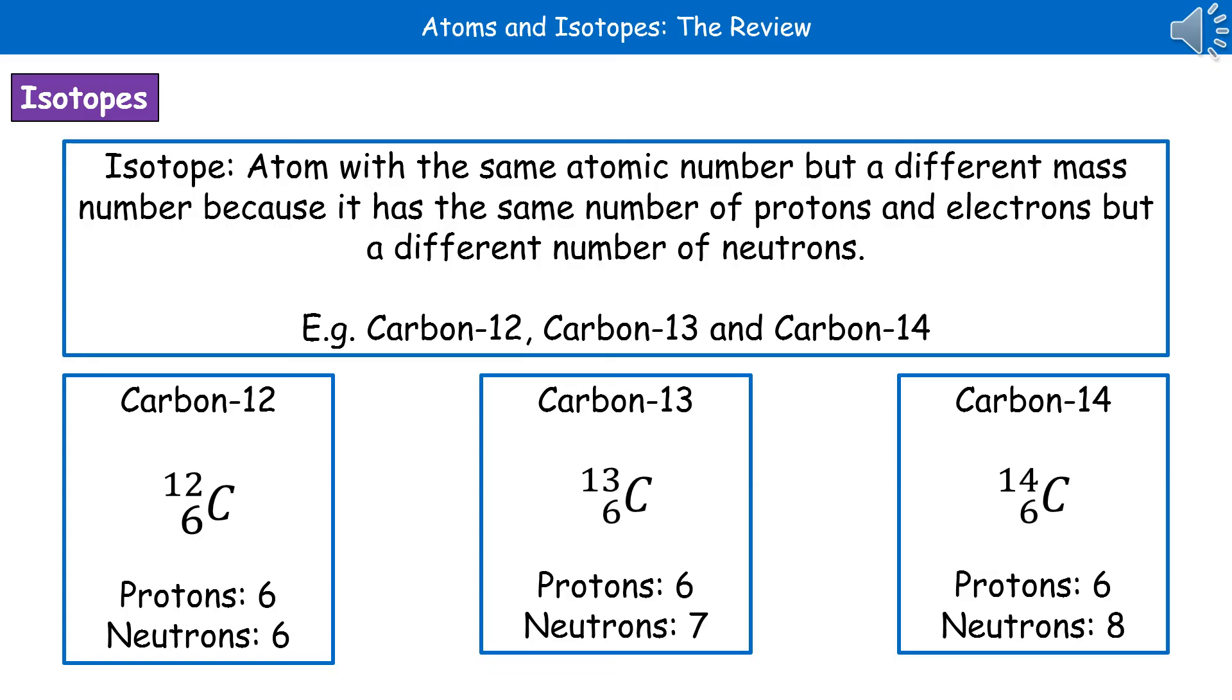So the number that comes after the word carbon tells us the actual mass number. So carbon-12, the mass number is 12. Carbon-13 it's 13. So when we then come to work out how many protons, electrons and neutrons they contain, we've got the atomic number which is 6 for them all because it's carbon. So that means they all have 6 protons and 6 electrons. But the number of neutrons is different because the mass number is different. And if you remember to work out the number of neutrons we do mass number minus the atomic number.